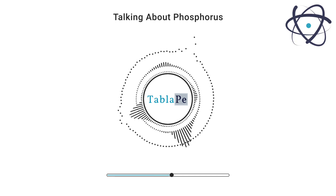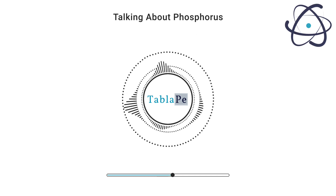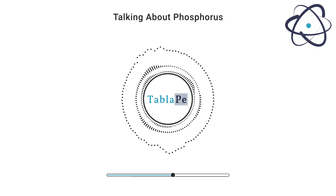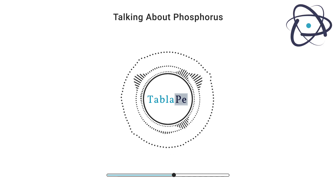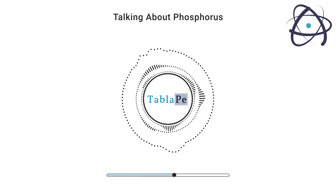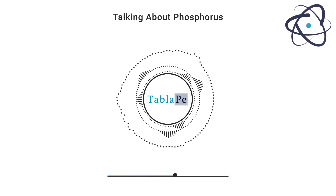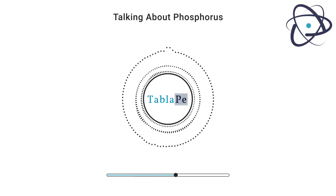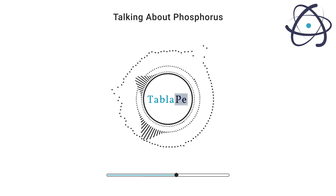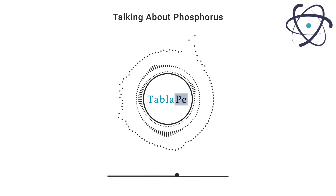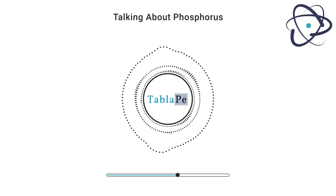Phosphorus has a range of oxidation states and is a common element in many chemical reactions. Its properties have been well recognized for thousands of years. It is essential to many biological systems, such as teeth and bones. It also has applications in the fields of pyrotechnics and chemical syntheses.